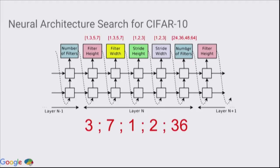For example, if the controller for this particular layer writes down the string 3, 7, 1, 2, and 36, what that means is the filter height is 3, filter width is 7, stride height is 1, stride width is 2, and the number of filters is 36. That's basically what the controller should write. And then it will concatenate these strings for longer networks so that you end up with a bigger neural network.